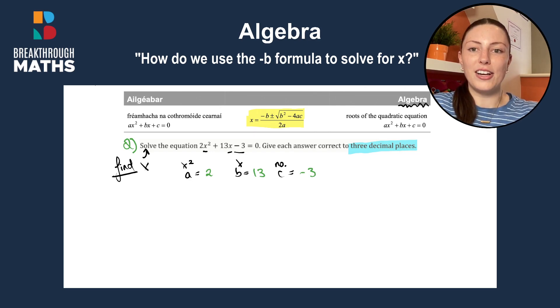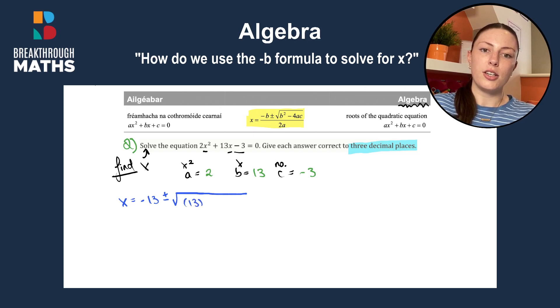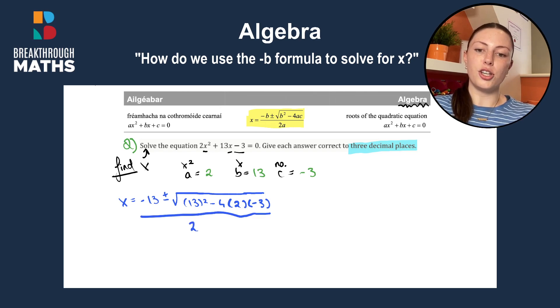So now we have all our letters and we can get into solving the minus b formula. So x is going to be equal to minus b, our b is 13, so minus b is minus 13, plus or minus, so I'm just following along with the formula I have highlighted in yellow, the square root of b squared, so 13 squared minus 4 by a by c. And our a by c is 2 by minus 3. And that's all over 2 by a. So 2 by a is 2 by 2.